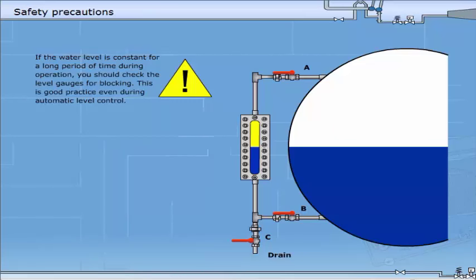This is good practice even during automatic level control. Close A. Close B. Open C. Observe water drain from drain pipe.